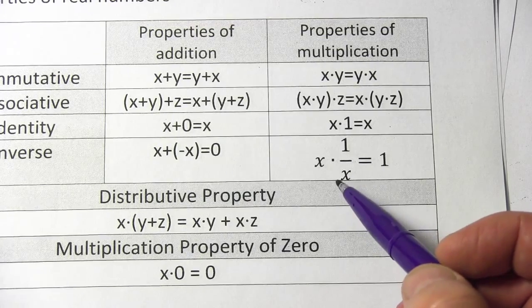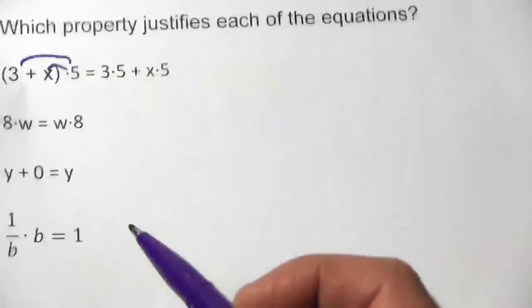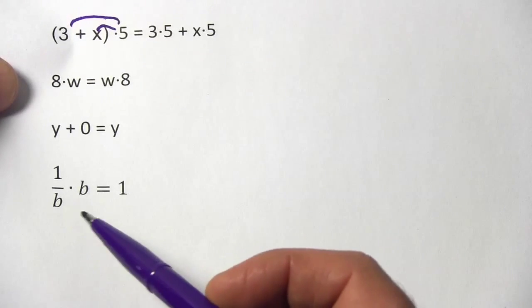This is the inverse property of multiplication. When you multiply something by 1 over that thing, you get 1.